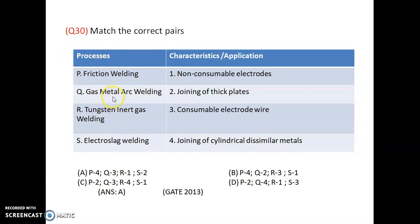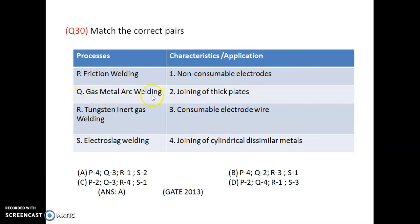Welding types to match: friction welding, gas metal arc welding, tungsten inert gas welding, and electroslag welding. Electroslag welding is used for joining very thick plates up to 900 mm. Gas metal arc welding can weld up to only 6 mm thickness. Electroslag welding can join workpieces up to 900 mm thickness.